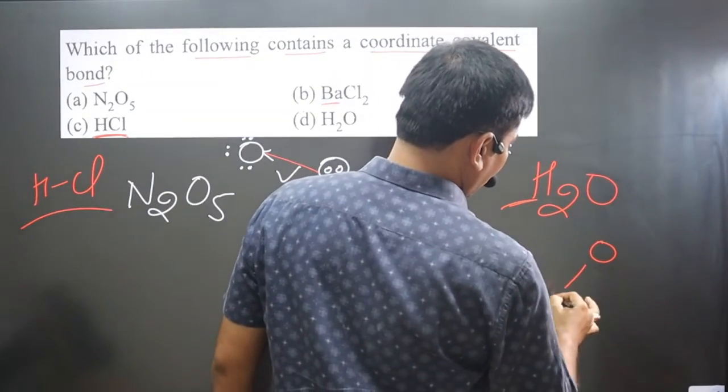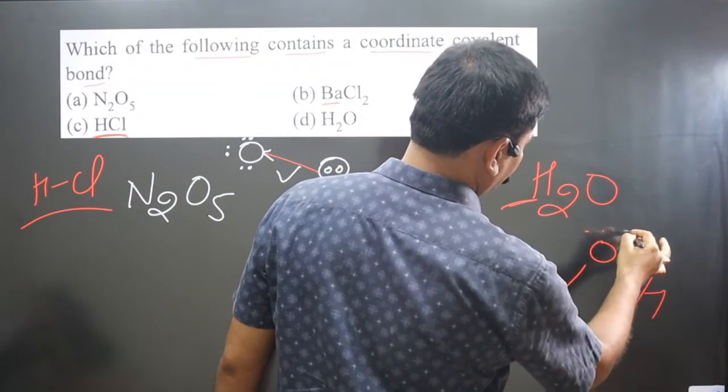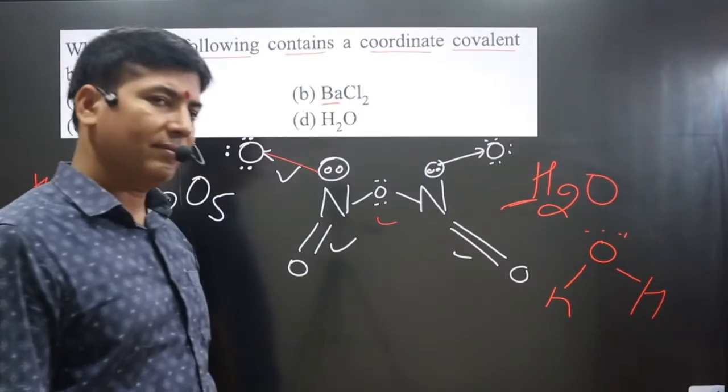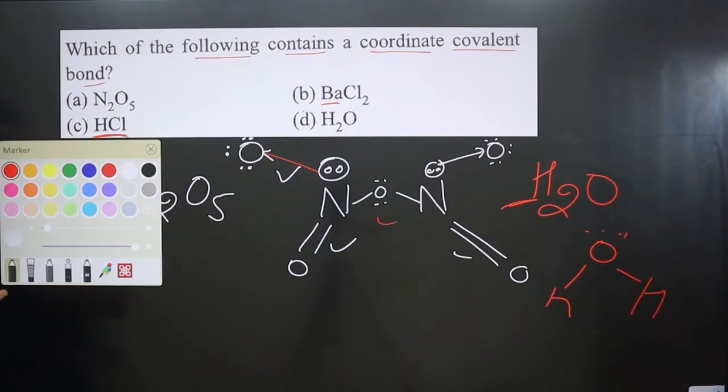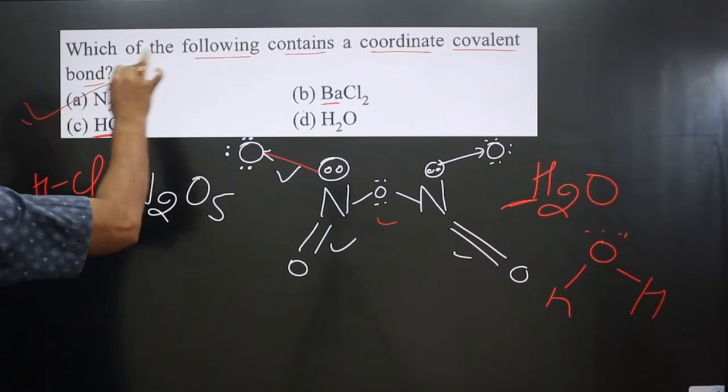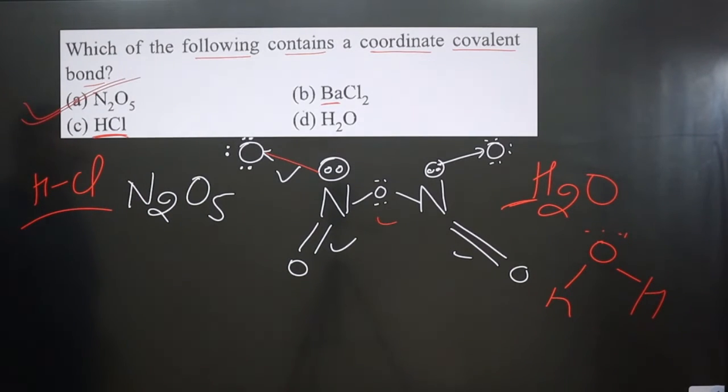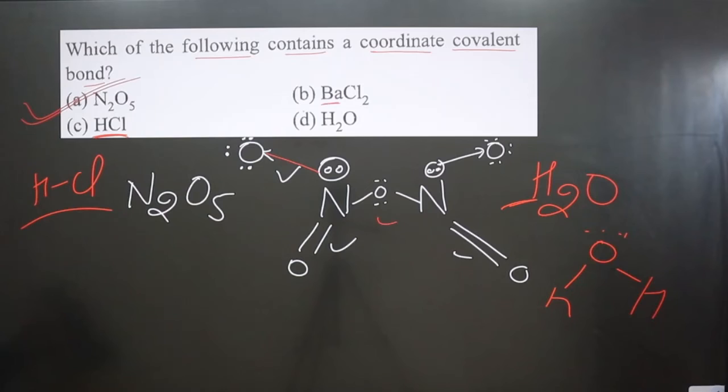H2O - if you draw the structure, this is the structure we have. Only covalent bond is there. So this is the only compound in which both covalent as well as coordinate bonds are present. Option A is correct. If you like this video, please share and subscribe to the channel.